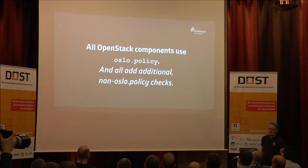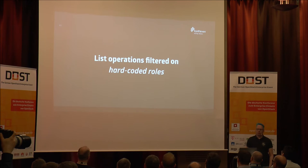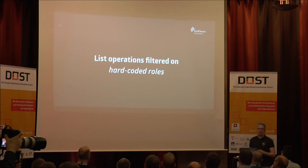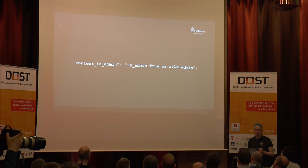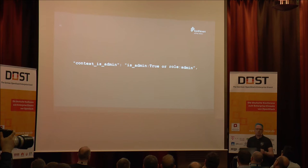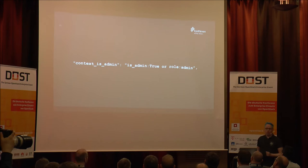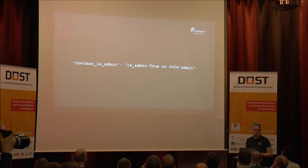All OpenStack components use Oslo policy — great standards. But they also use additional non-Oslo policy checks that are hard-coded. For example, list operations: if you want to list all your VMs, there are actually hard-coded roles used to filter the result of all VMs in your OpenStack instance. And you have something like context_is_admin, a rule that you will find in every single policy JSON file of all OpenStack components. Every single service has this hard-coded somewhere in the source code. You can delete it, but then your OpenStack is going to break in fun ways and you will have interesting fireworks on Horizon Dashboard.